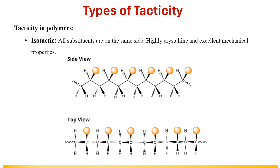Isotactic polymers often exhibit a high degree of crystallinity due to the regular and symmetrical arrangement of side groups, which leads to better packing and a more compact structure. These polymers also show improved mechanical properties due to their high degree of crystallinity. Ziegler-Natta and metallocene polymerization are used in the synthesis of isotactic polymers.